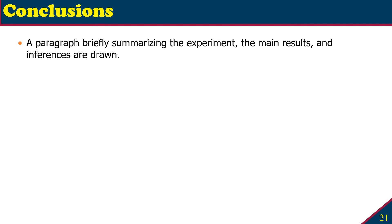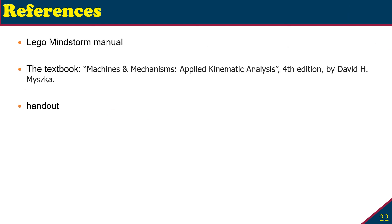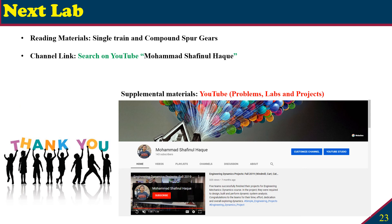The conclusion section follows the same format as all our labs — write a paragraph briefly summarizing the experiment, state the main results, and draw any inferences from the experiment. References for this lab include the Lego Mindstorms EV3 manual available on Blackboard and the website, the course textbook for mechanism analysis, and the lab handout. That is all for Lab 3. Lab 4 will be on simple and compound spur gears. Take care and I'll see you in the next lab.